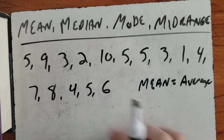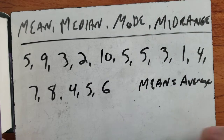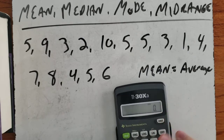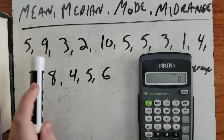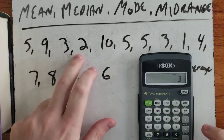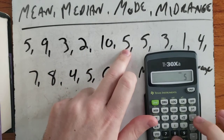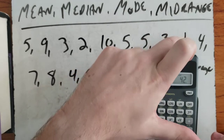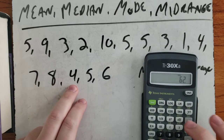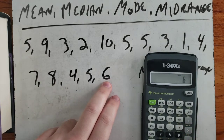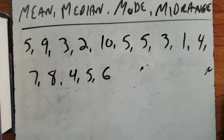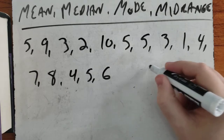The way we find the mean is we add up all the numbers in the data, then divide by how many numbers there are. It doesn't matter what order they're in. So let's do that on our calculator: 5 + 9 + 3 + 2 + 10 + 5 + 5 + 3 + 1 + 4 + 7 + 8 + 4 + 5 + 6, and our total is 77.